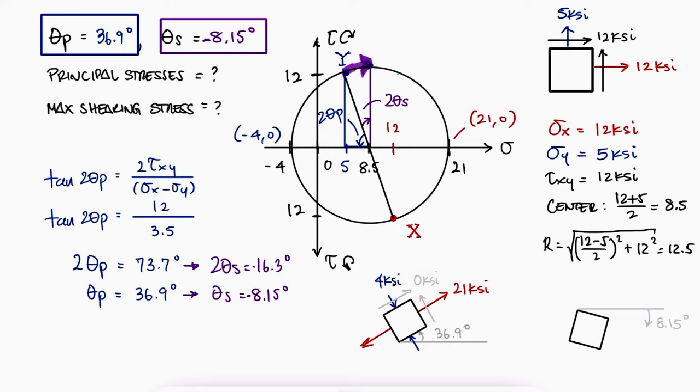For an 8.15 degrees clockwise rotation, the new sigma y value would be 8.5 as is the new sigma x value, and this is where we find the maximum shearing stress.